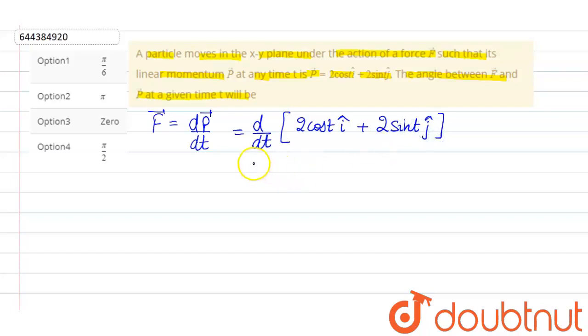Now on differentiating, here we get the derivative of cos is minus sin. So it becomes minus 2 sin t i cap plus 2 cos t j cap. This is equal to force.